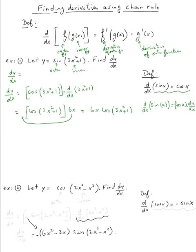For example two, it's almost similar except we have a cosine. Same thing — cosine is the outer function, and two x cubed minus x squared is the inner function. So dy/dx equals the derivative of the outer: derivative of cosine is minus sine, so it's minus sine of the inner function, which is two x cubed minus x squared, everything times the derivative of the inner with respect to x of two x cubed minus x squared.